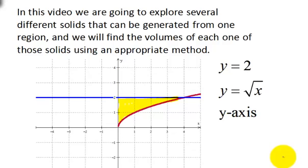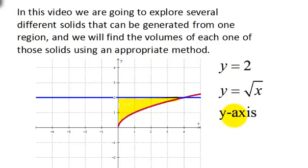Welcome to this video about finding volumes. In this video, we're going to explore several different solids that can be generated from one region. You can see the region right here, and we will find the volume of each one of these solids using appropriate methods. We're going to look at three different methods. This region is formed by the lines y equals 2, the curve y equals square root of x, and the y-axis. Let's go ahead and look at our first solid.